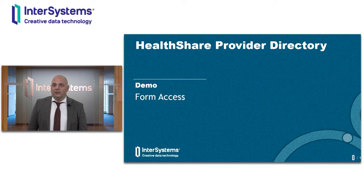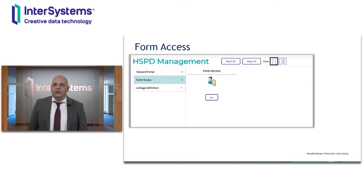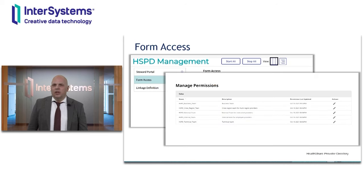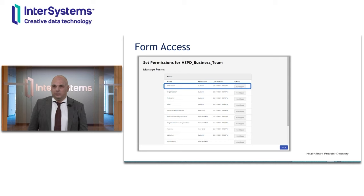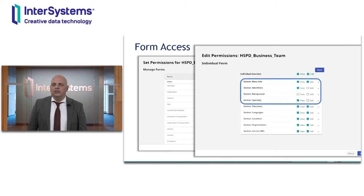Let's take a closer look at the new Form Access feature. Here is the new Form Access app in Provider Directory. Under Form Access, we can manage permissions for the roles that a site can add for their operational needs. A site can define different roles for different teams of users, such as roles for their business, external, and cross-regional teams. We're going to take a look at the business team permissions. For this business team, we can define permissions for all the forms they manage. These permissions can be view only, view and edit, or custom for the entire section. We can define access at the field-by-field level as well. If we look at the permissions defined for managing an individual provider record, we can see a business member has view and edit access for most sections, some sections view only such as identifiers and specialties, and for others no access at all.